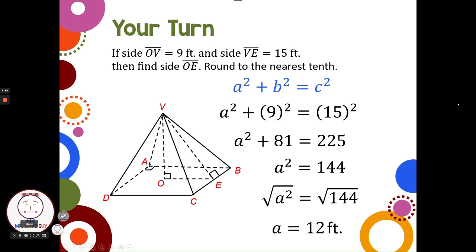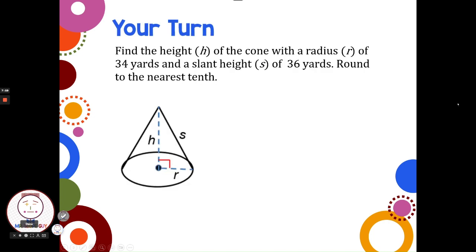Let's try a new one. Let's look at a new shape. Let's try this one with a cone. Pause the video here and see if you can find the missing side. All right, welcome back. So we have find the height of the cone with a radius R of 34 and a slant height S of 36, round to the nearest tenth. The radius is 34. That's a leg. And we're asked to find the height. So we're missing a leg. This S for slant height, that is our hypotenuse. That's the side opposite of the 90 degree angle.